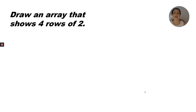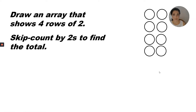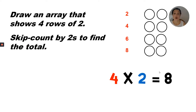Let's draw an array that shows four rows of two — one, two, three, four rows with two in each row. Skip count by twos to find the total. We can skip count by two four times. Two, four, six, eight. Four times two equals eight. Four rows of two equals eight.